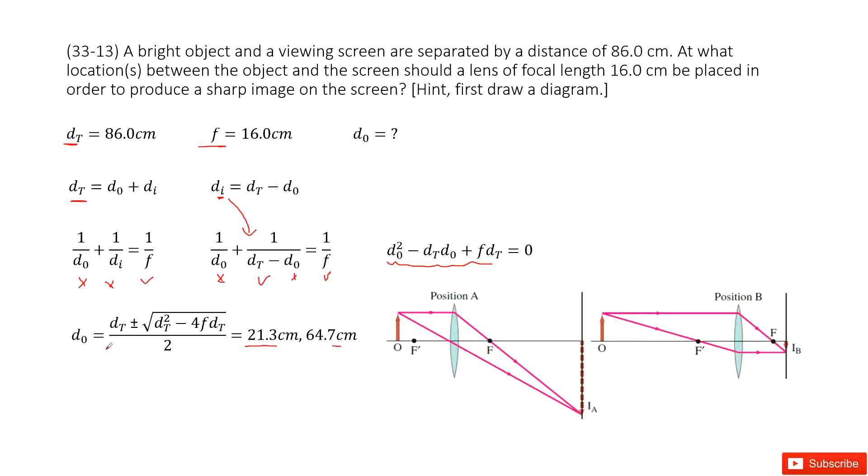Just as proved, there must be two values for d₀. One is the object is more close to the lens, the second one is the image is more close to the lens. You can plot it, looks like these two. Thank you.